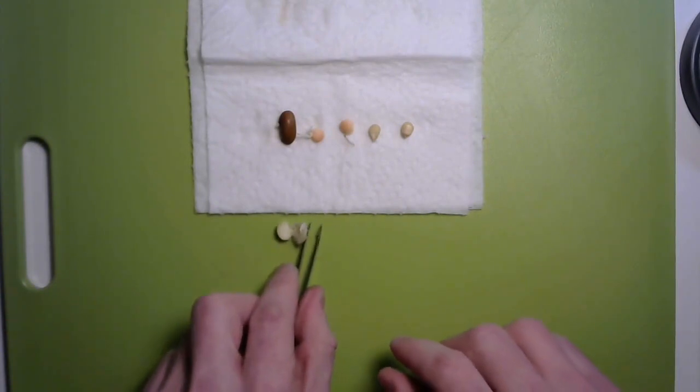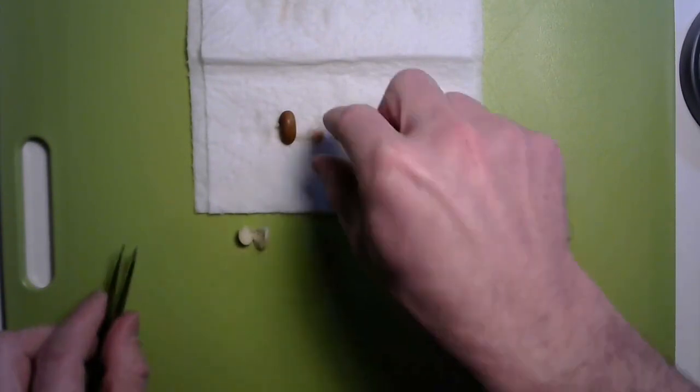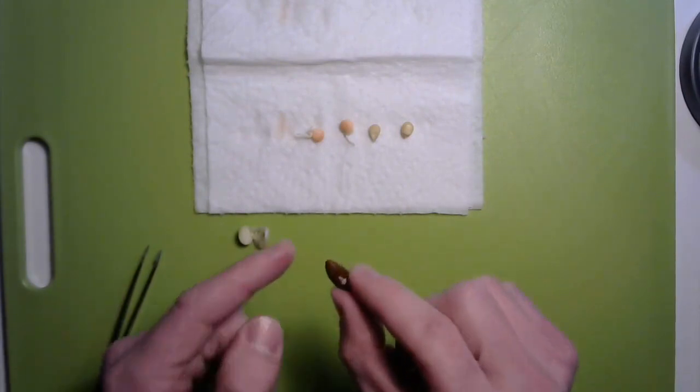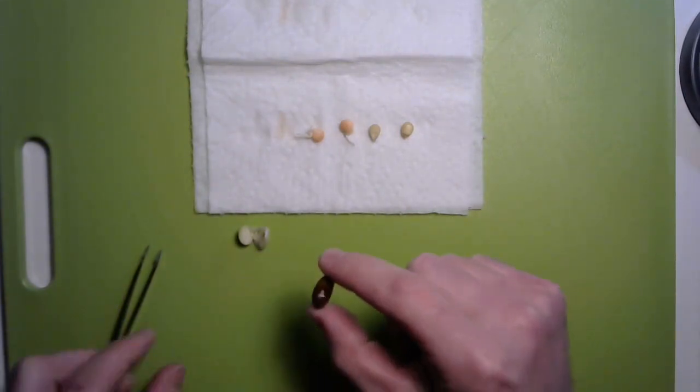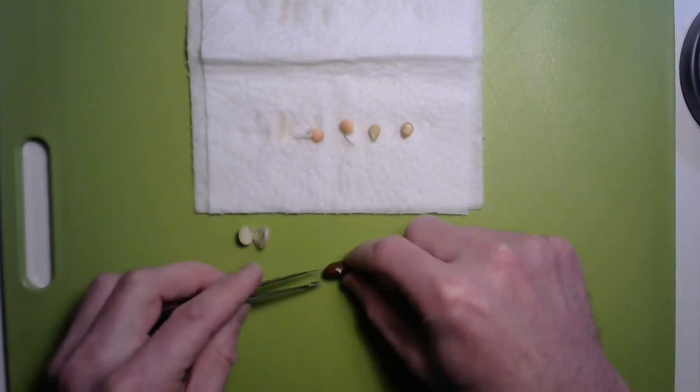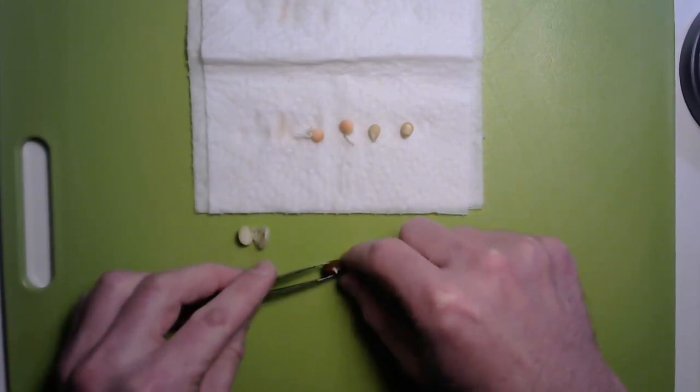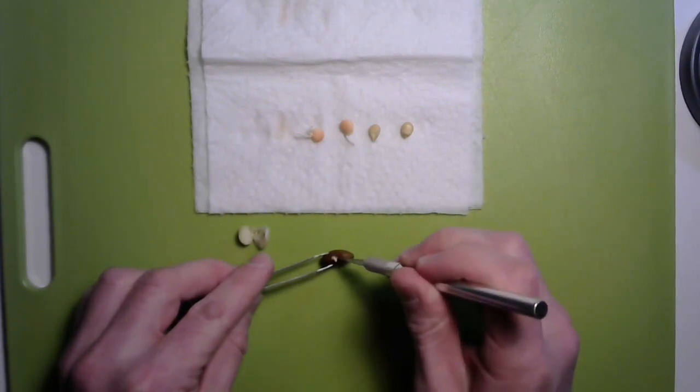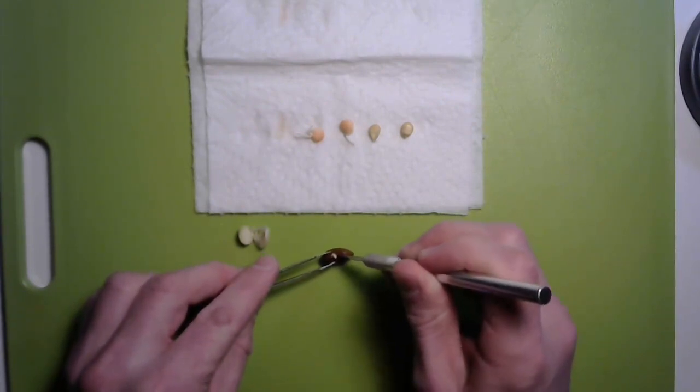I'm going to move this one off to the side and grab my next one. This one's a bean, and the same thing. I'm going to look for that area where it's sort of divided and I'm going to cut along that. Use my tweezers to hold it nice and steady. And there we go.